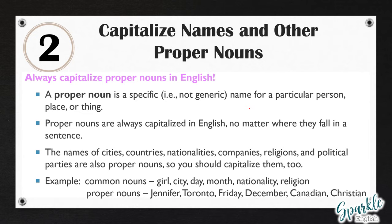A common noun would be 'girl'; a proper noun would be a name of a girl — for example, 'Jennifer' — you would have to capitalize the J. A common noun would be 'a city'; a proper noun would be 'Toronto,' which is the name of the city, so you capitalize the T. A day: 'Friday' — again with a capital. A month: 'December.' A nationality: 'Canadian.' Religion: 'Christian.'